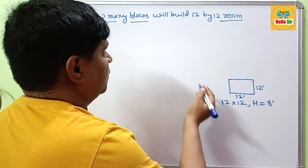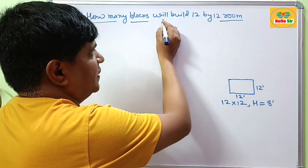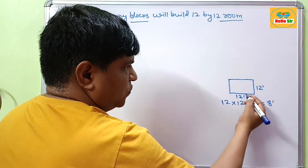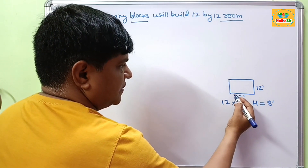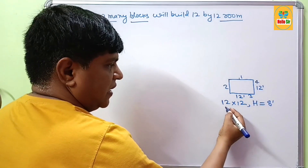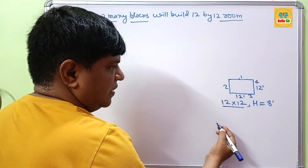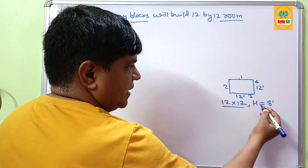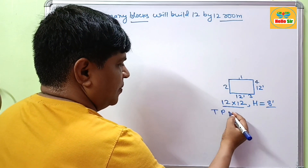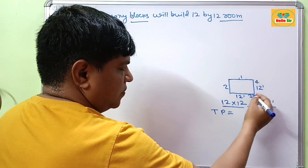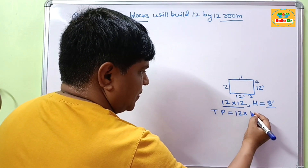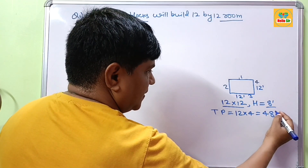First, if you want to solve how many concrete blocks will be required for this size room, you have to find out the total area of your 4 walls. The room contains 4 walls, and the dimension of length and width is 12x12 with wall height of about 8 feet. Now we calculate the total perimeter: the 4 walls have length 12x4, which equals 48 feet.